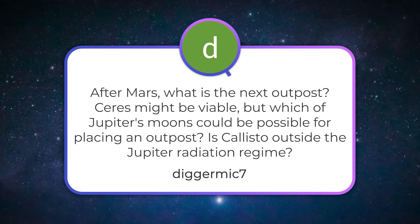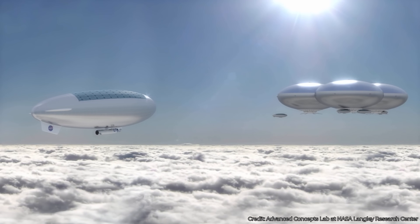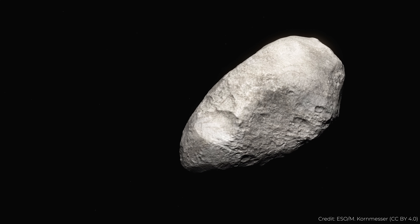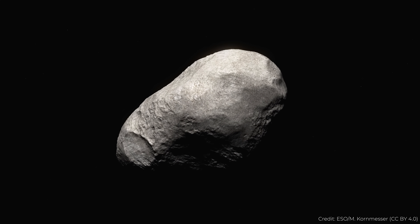Digger Mike 7: after Mars, what is the next outpost? Ceres might be viable, but which of Jupiter's moons could be possible, and is Callisto outside the Jupiter radiation regime? Realistically, I don't see humanity living in many places beyond the Moon and Mars — maybe the cloud tops of Venus, but even that sounds pretty difficult. There are asteroids relatively close to Earth with an orbital period around the Sun very similar to Earth's, meaning we don't need a lot of delta-V to reach them. I can imagine some future station being set up on a near-Earth asteroid with very low delta-V — some asteroids have less delta-V to get to than the Moon or Mars — and these could serve as gas stations and waypoints to other places in the solar system.